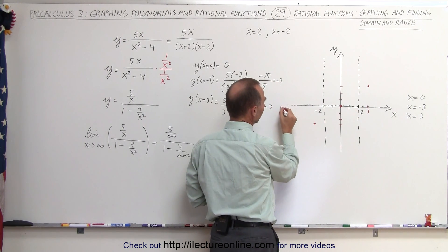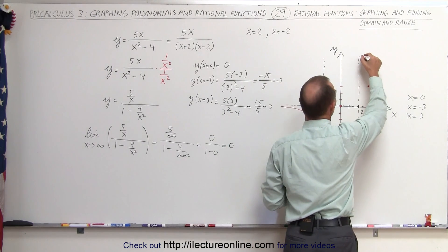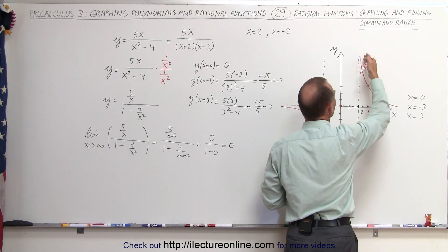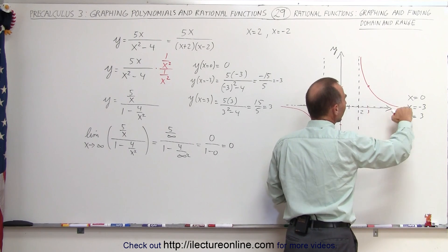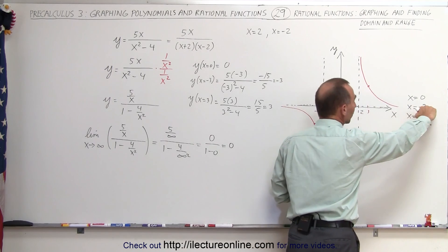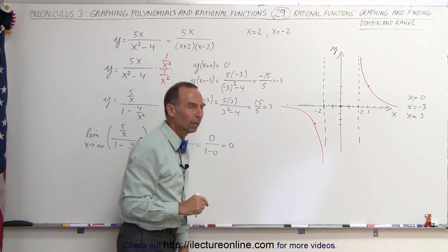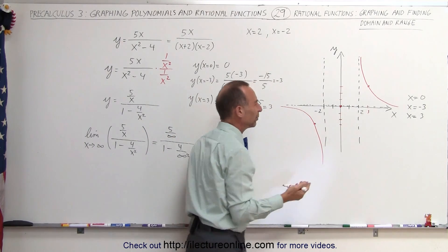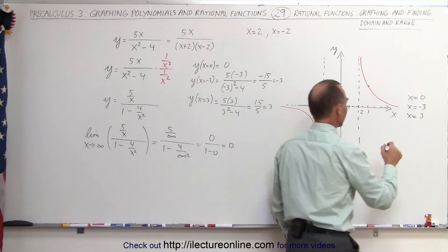So here we can assume that the graph will look like this for the outer regions. We realize we cannot cross the vertical asymptotes, and we're not expected to cross the horizontal asymptotes as x becomes large or as x approaches negative infinity. But what about in between? We're not sure yet, so we may need a couple more extra test points.